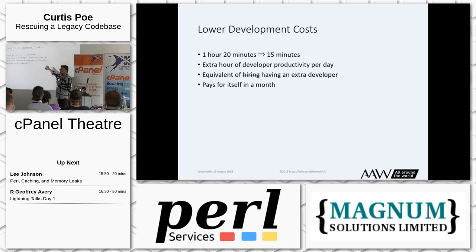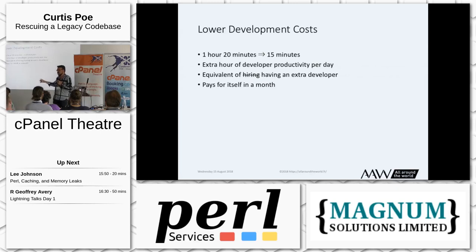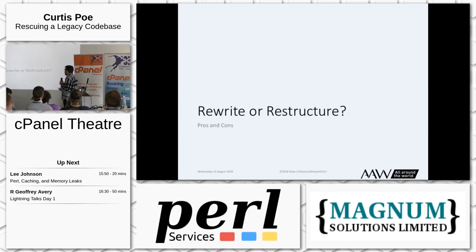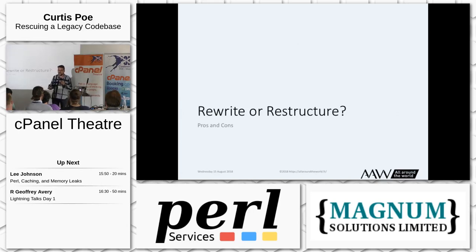This is how you start building up a business case — you get down to the point where you can have real numbers and make real comparisons of the different alternatives. This is something that management is going to appreciate when they have to make the decision about whether or not you're going to rewrite or restructure an application.